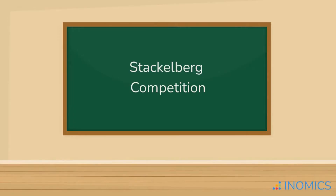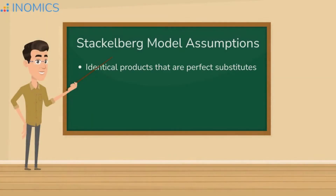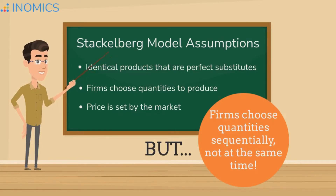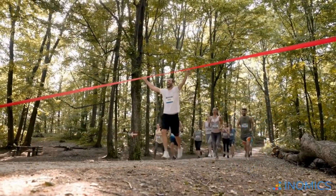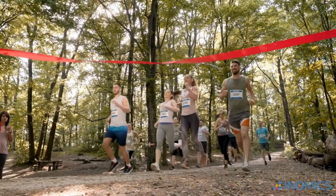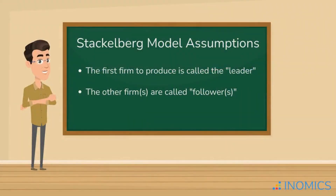Third and finally, Stackelberg competition is the last one we'll talk about today. Stackelberg is just like Cournot competition: identical products that are perfect substitutes, firms choose quantities to produce, and prices are set by the market. However, the difference is that firms choose their quantities in order and not at the same time. The first firm to choose a production quantity has an advantage and can capture more market share. We call this a first mover advantage in economics, and the firm that gets it is called the leader. The other firms are considered followers and are left with a smaller part of the market share.